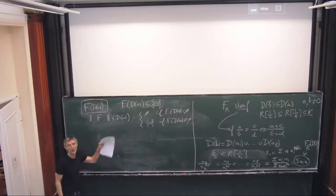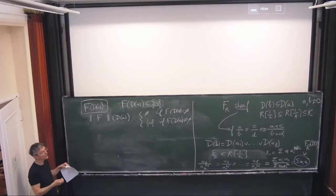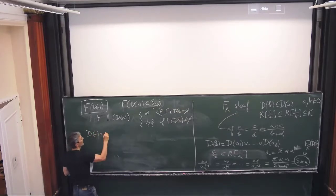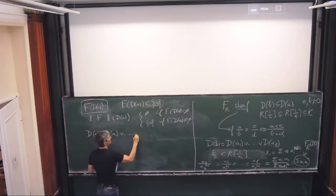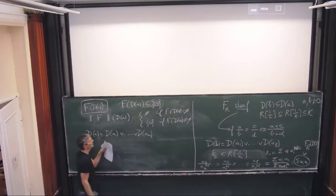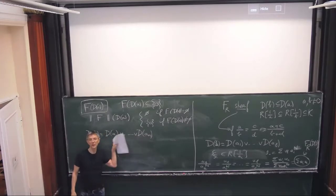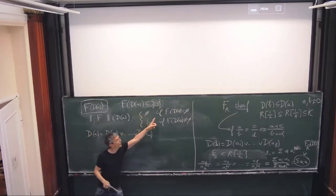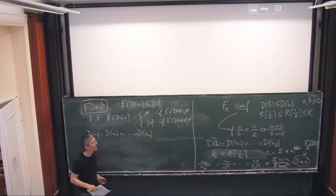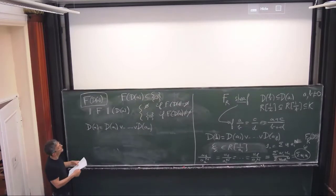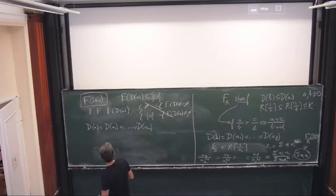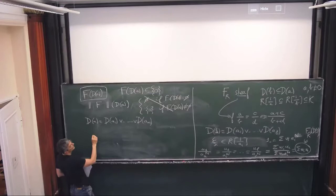But if you do this, you don't get a sheaf in general, because it may be that you have D(a) covered by a_1, …, a_n, and it may be that they are all inhabited. Then you cannot glue them together: if f(D(a)) was empty, then you have a problem. So the naive definition is wrong.